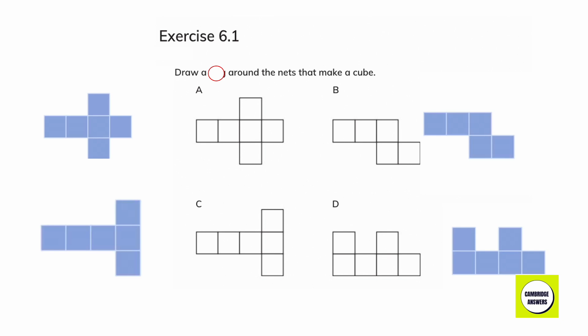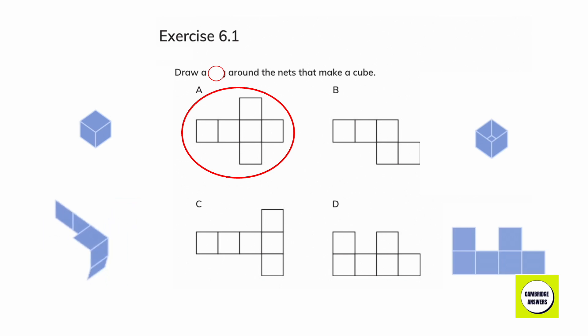Exercise 6.1: Draw a ring around the nets that make a cube. The first one is a cube. B is not a cube. C is a cube. D is not a cube.